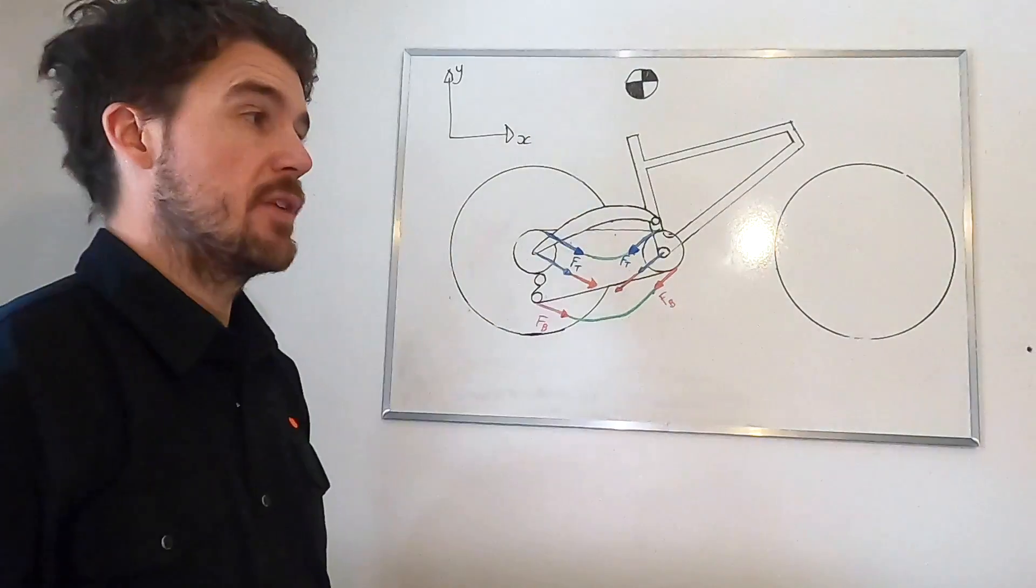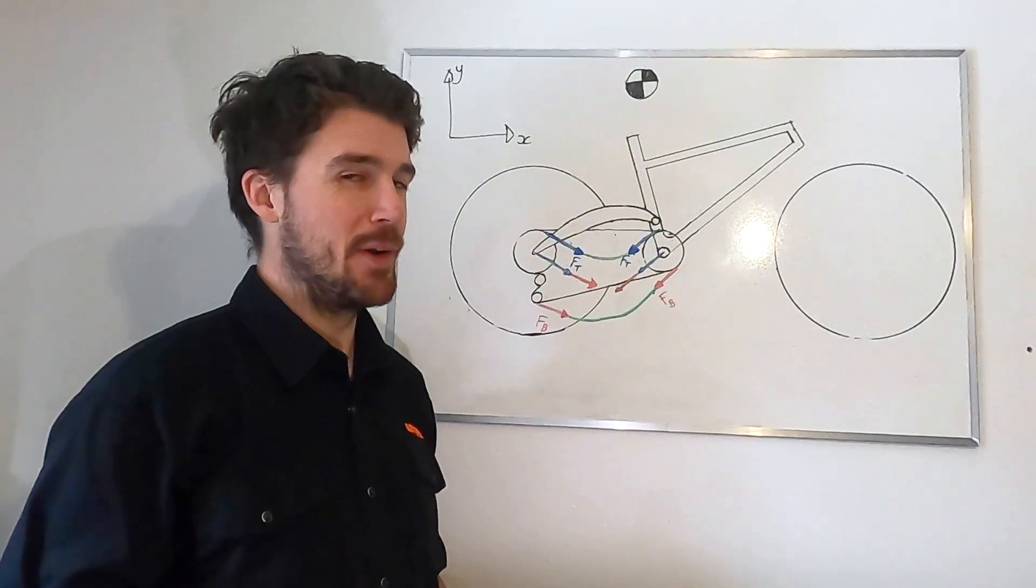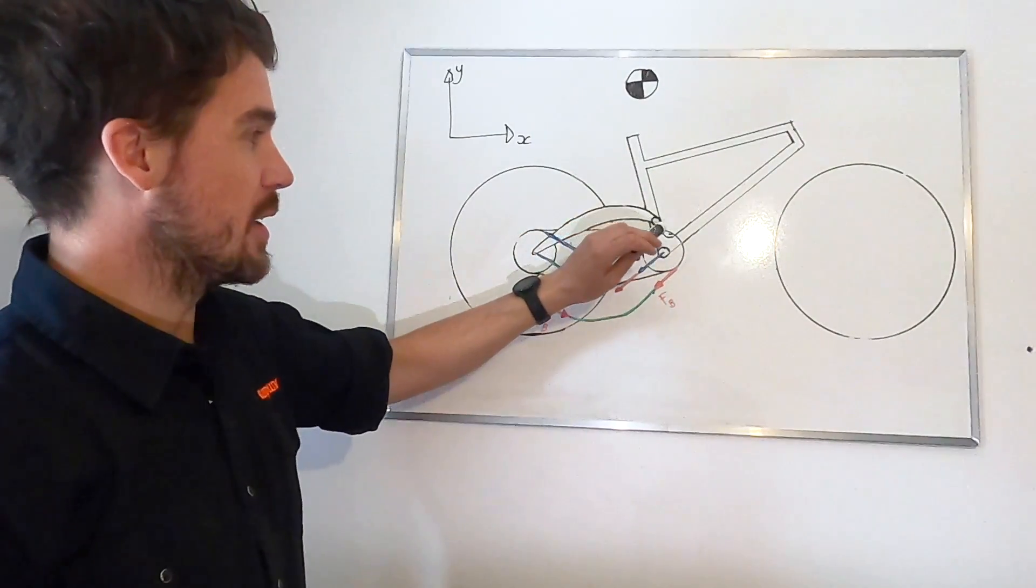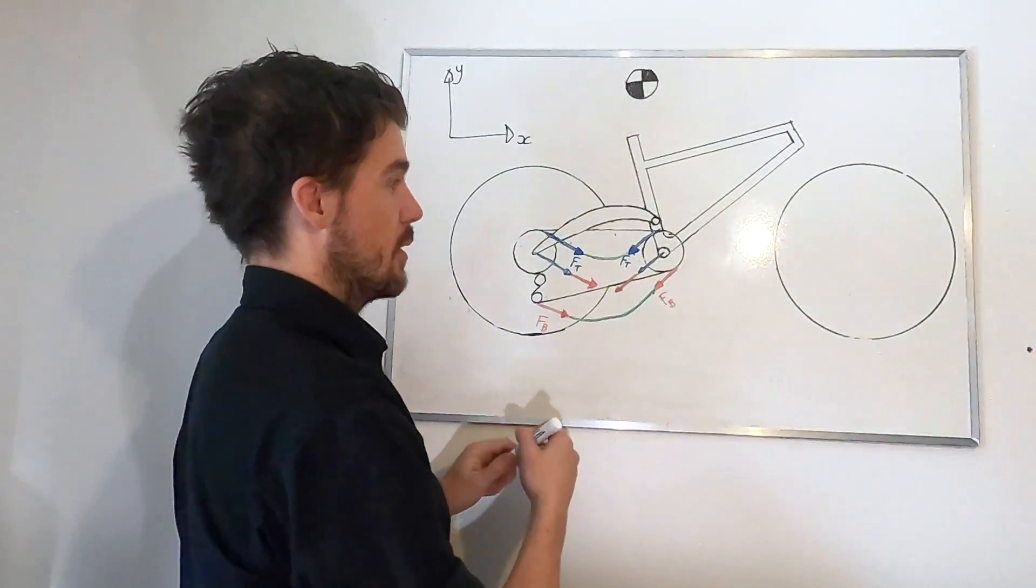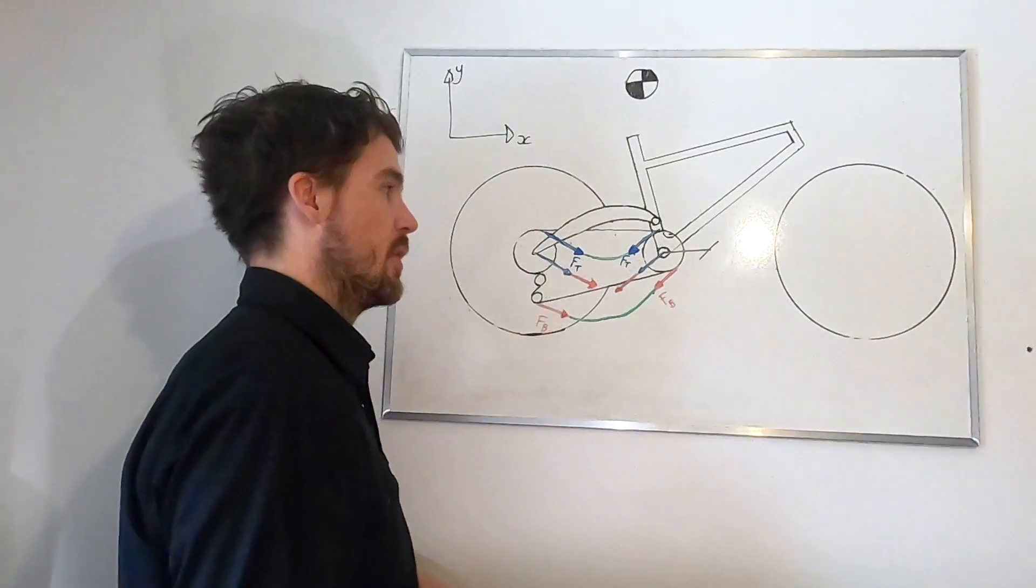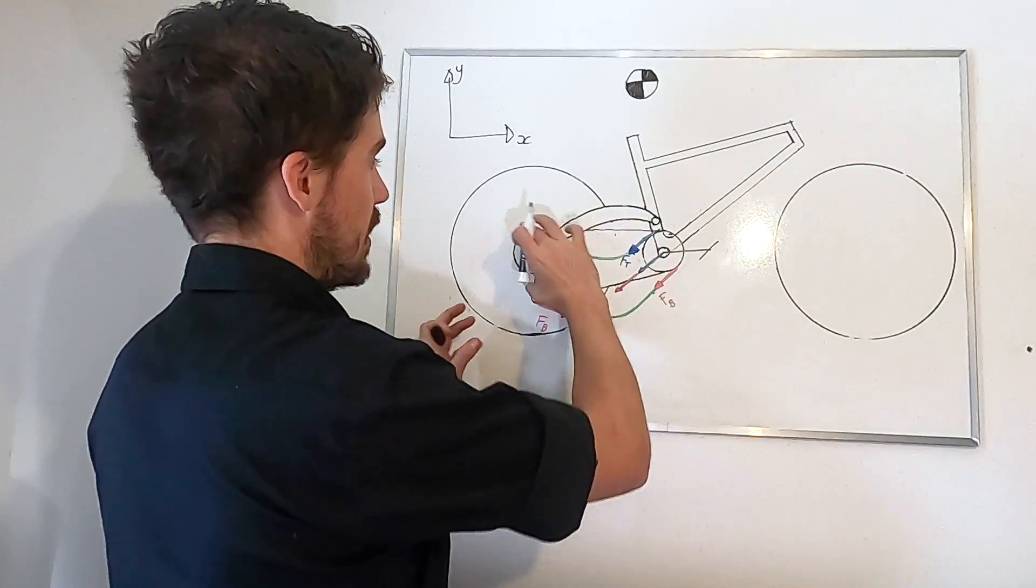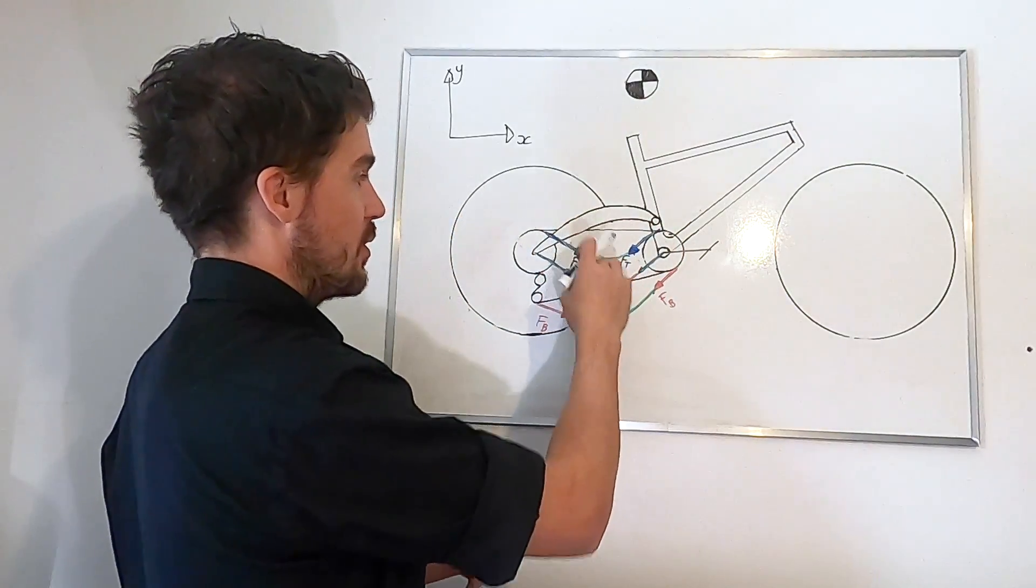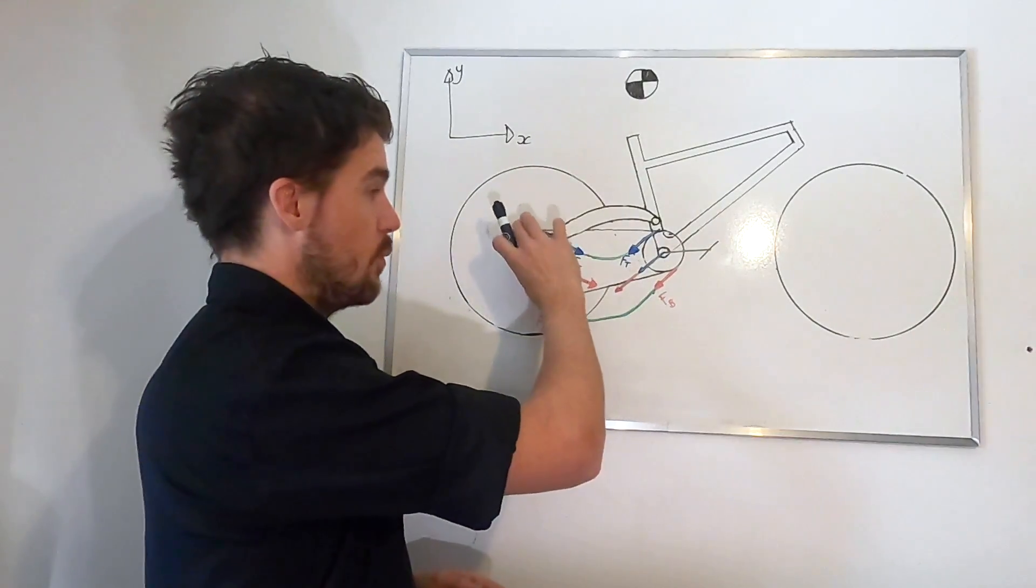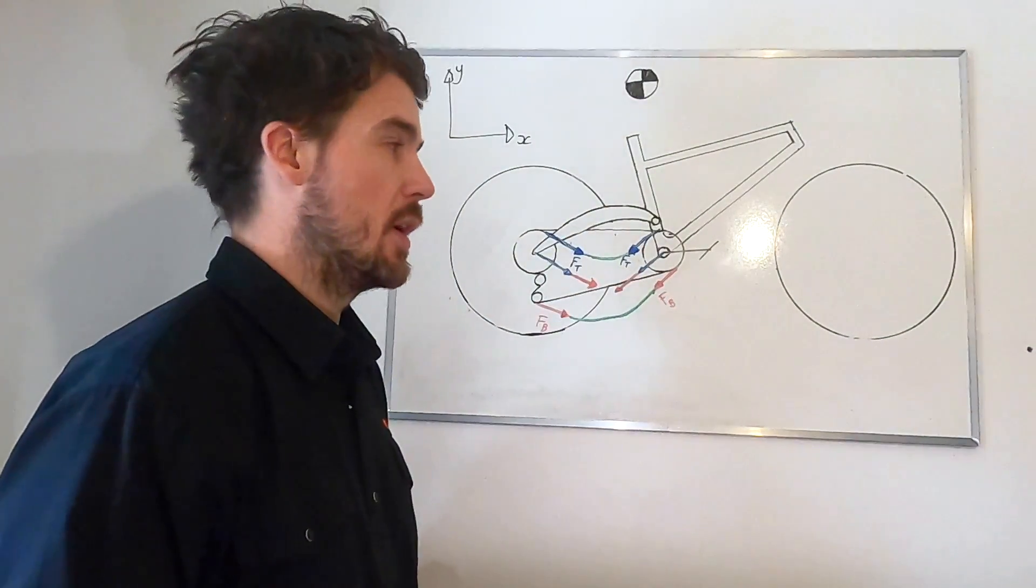So, clutch derailleurs are actually, in some regards, quite bad for suspension performance. Having said that, I'm not about to take the one off my bike because I don't like the noise either. But, essentially, as this chain length changes, if we assume that, you know, we're holding the crank position constant here, so you've got your feet on the pedals, you're holding them consistent. That means all of this extra chain length has to come from the back. If that happens quickly enough, and that happens very dynamically, then that actually can re-engage the freehub. And so that freehub overrun, all of a sudden, stops being quite so relevant.